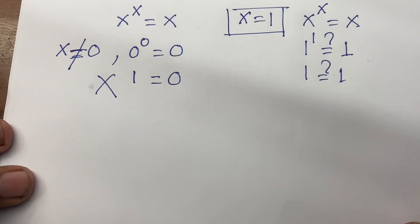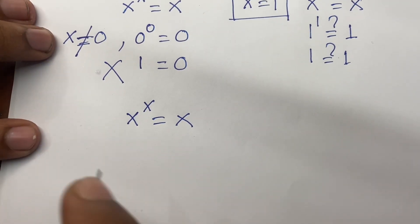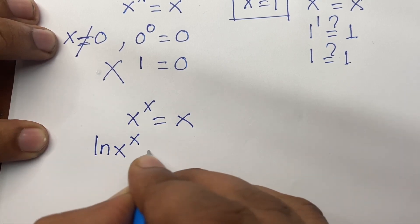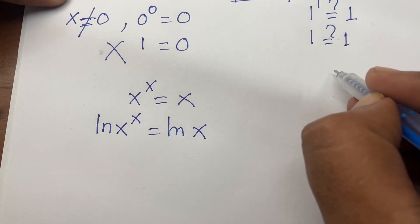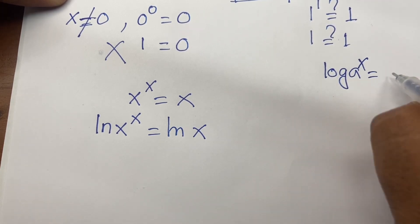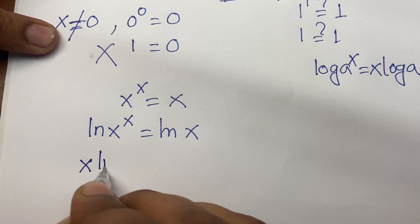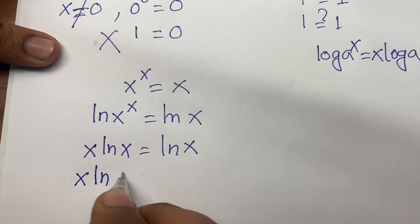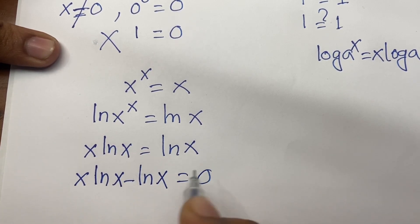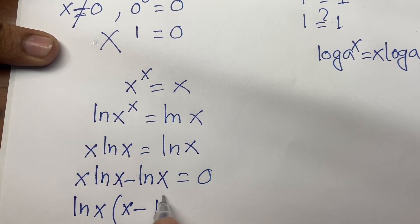Again, if I solve this question using another method — our question is x to the power x equal to x — I use the natural log on both sides. This gives ln of x to the power x equals ln x. According to log rules, log of a to the power x equals x times log a. So I can say x ln x equals ln x. Moving ln x to the front: x ln x minus ln x equal to 0. Here ln x is common.